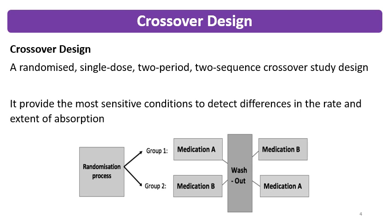In the second period, after the washout period, the doses are crossed over. If group A took test in period 1, group A will take reference in period 2, and vice versa. This rules out intrasubject variability and variability due to subjects' age or metabolism, because each subject takes both the test and the reference. That is why crossover design provides the most sensitive conditions to detect differences in the rate and extent of absorption.